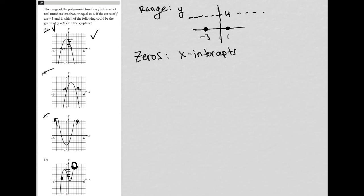So the only graph that fits all the criteria, or the two criteria that we have here, is choice A.